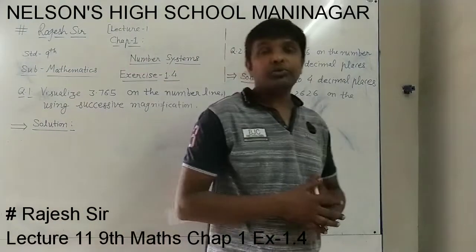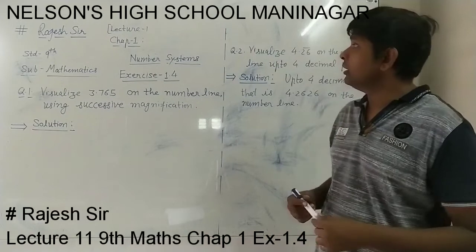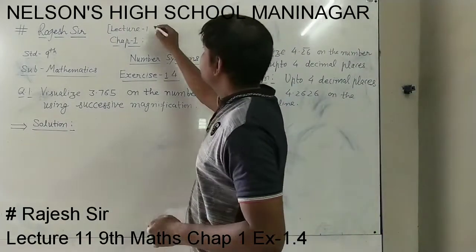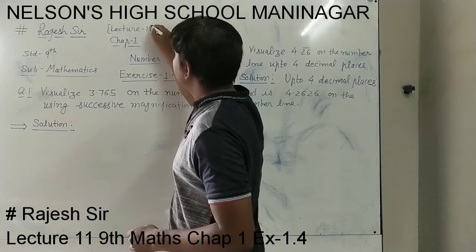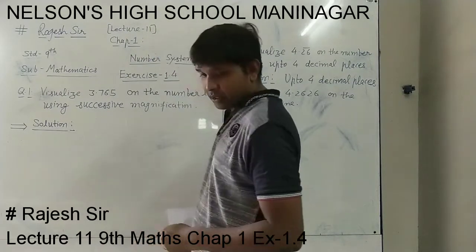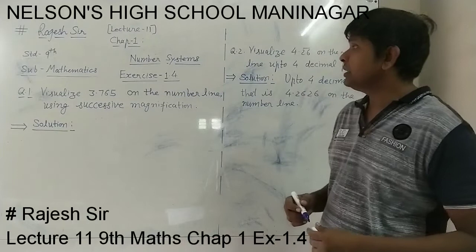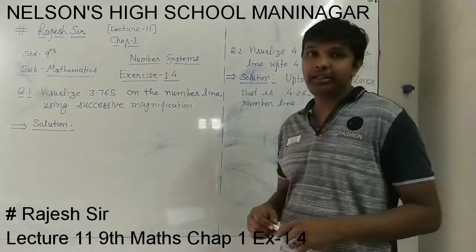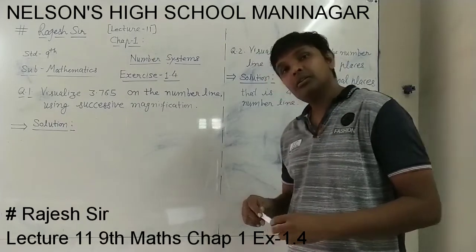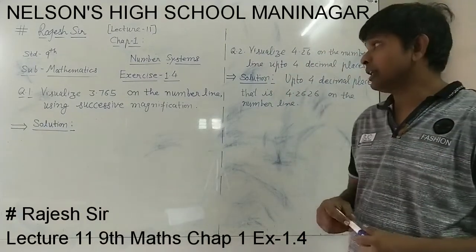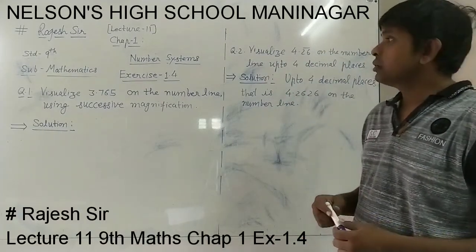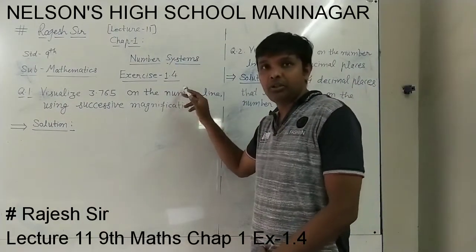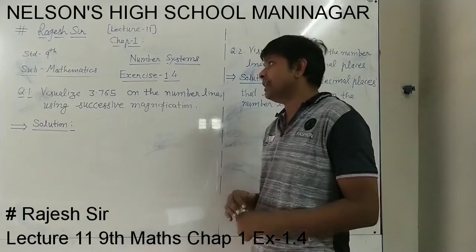Hello students, welcome to standard 9 mathematics chapter 1 number system. This is lecture number 11. In the last lecture we have seen how to represent real numbers on the number line using successive magnification. Related to that, you have exercise 1.4 to work through.